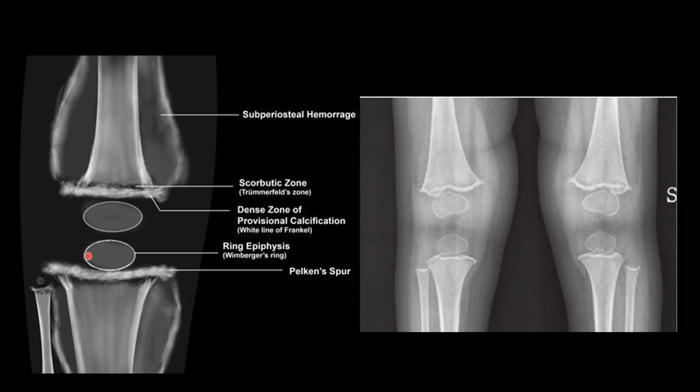Wimberger's ring is seen in the epiphysis — the epiphyseal sign of scurvy. The epiphysis itself is not white but only has a sclerotic or white margin, which is the Wimberger's ring. The cortex is very thin — pencil-thin cortex. And because of capillary fragility, there are subperiosteal hemorrhages leading to periosteal elevation. These are the findings of scurvy.